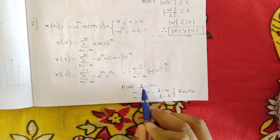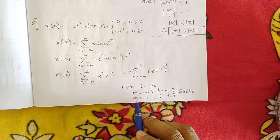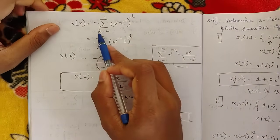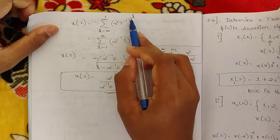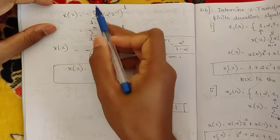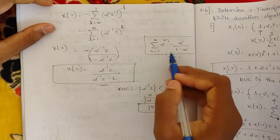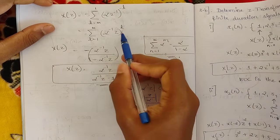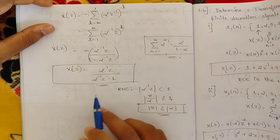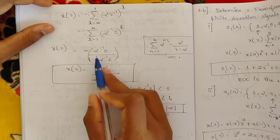To bring this to standard form, substitute l = −n. When n = −∞, l = +∞; when n = −1, l = +1. The expression becomes: X(z) = −∑(l=1 to ∞) (α^(−1)·z)^l. Flipping the sign and using the geometric series, X(z) = −(α^(−1)·z) / (1 − α^(−1)·z), or equivalently α^(−1)·z / (α^(−1)·z − 1) after multiplying through by −1.